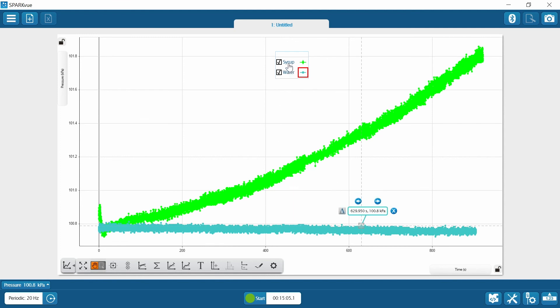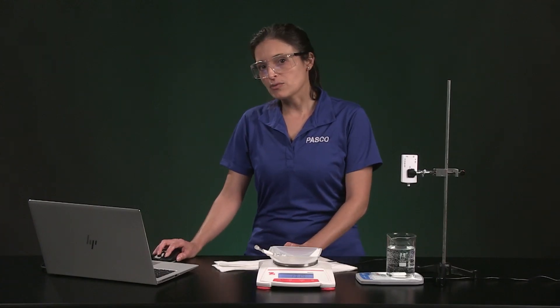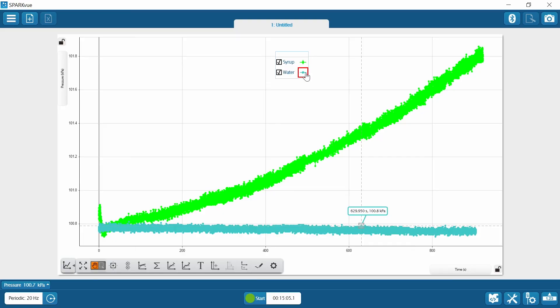Notice how both runs are checked in the legend. I can hide or make a run visible by checking the box in the legend. If I want to get coordinates from the syrup run, I need to make sure the red box is around that run. When you use any of the Spark View tools, make sure the red box is on the run you are interested in. To view both runs at full scale at the same time, make sure both runs are checked and then hit the scale button.